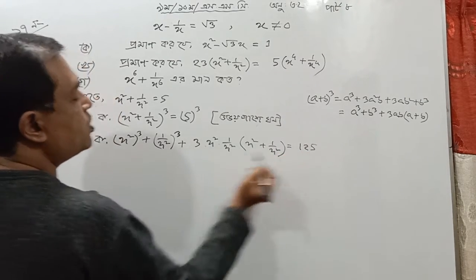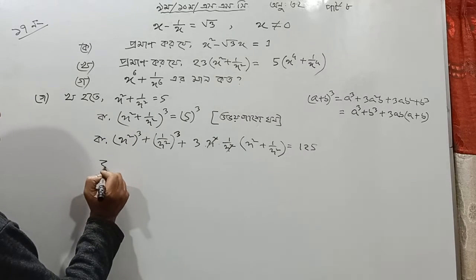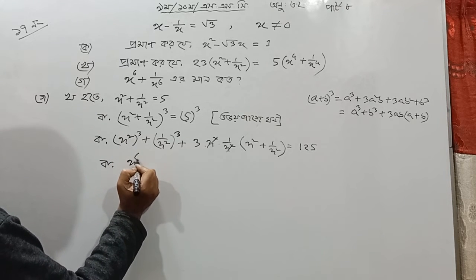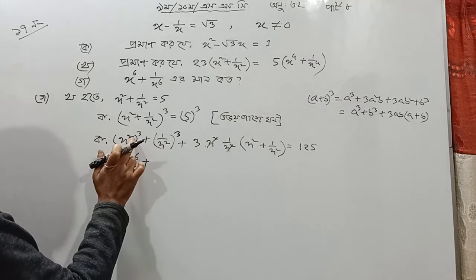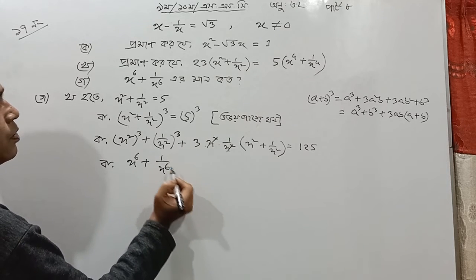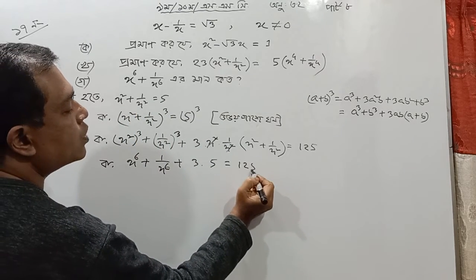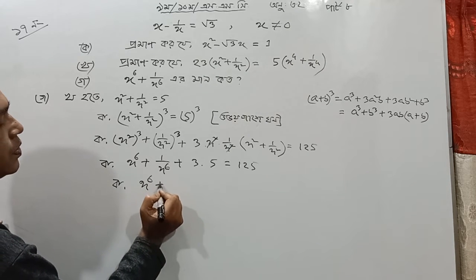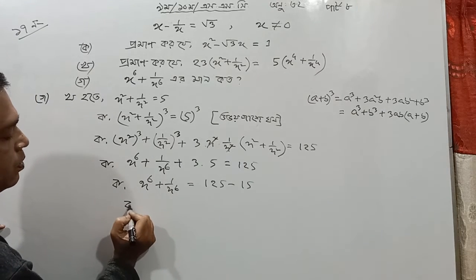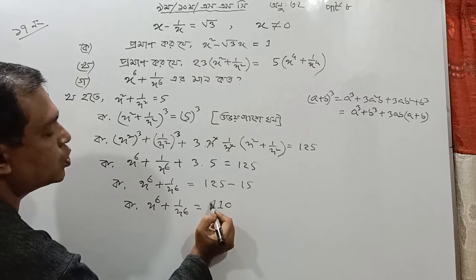If you have a cube, then you have a cube plus b cube. A plus b whole cube equals a cube plus b cube plus 3ab into a plus b. The cube looks real — it is 1. It has a cube that will be 0.8. So, x to the power 6 plus 1 by x to the power 6 is 1. That is simply the answer.